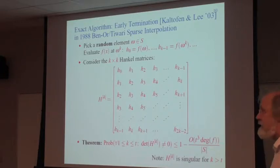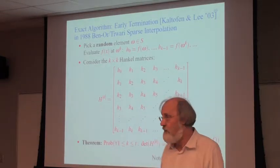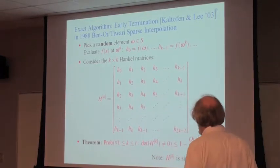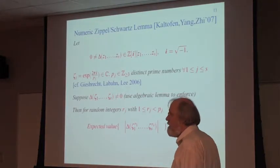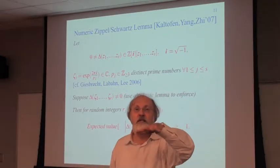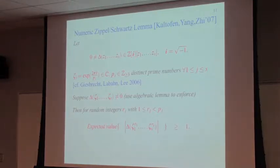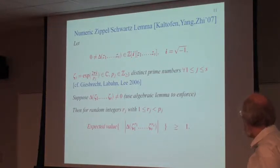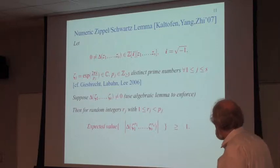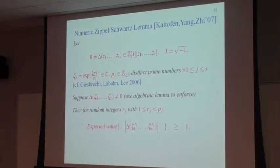She put that in her thesis. She did the probabilistic analysis and went off to the University of Waterloo. And converted this algorithm at the University of Waterloo to a numerical algorithm where there is noise in the values. So, early termination. So, now it's a numerical algorithm. And this is much later actually. I proved this in 2007.